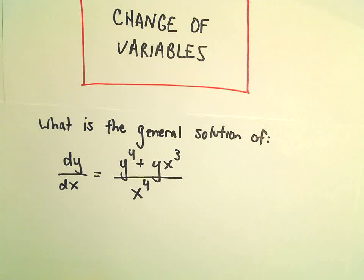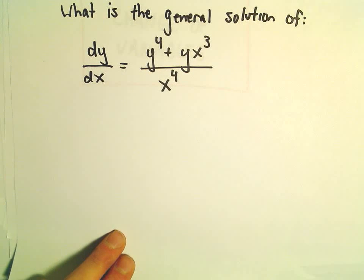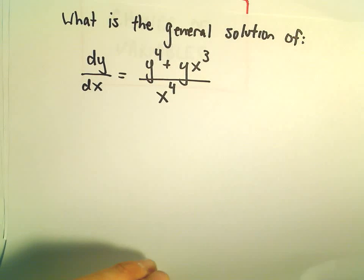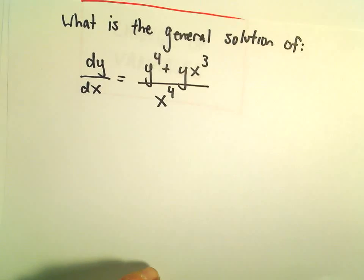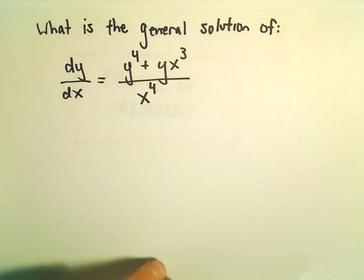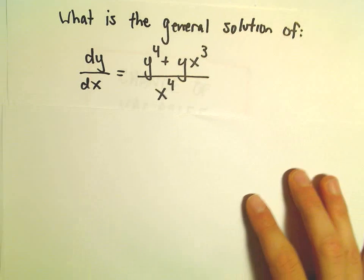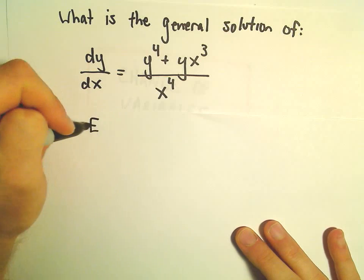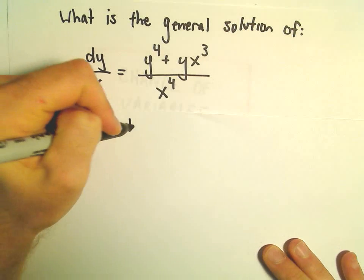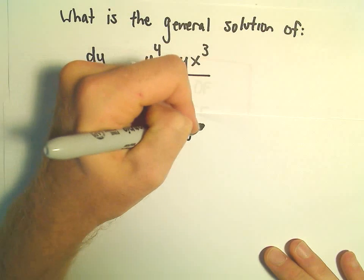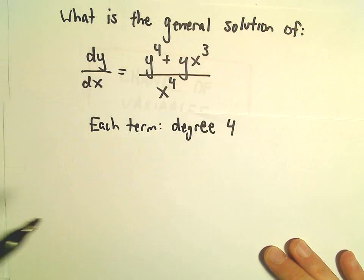Here we're going to look at another example of solving a homogeneous differential equation by doing a change of variables. We have dy over dx equals y to the fourth plus y times x cubed, all over x to the fourth. We can notice this is a homogeneous equation since each term has a degree of four.